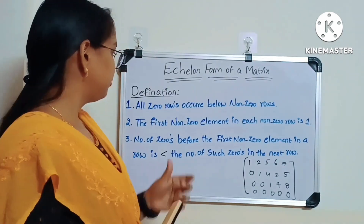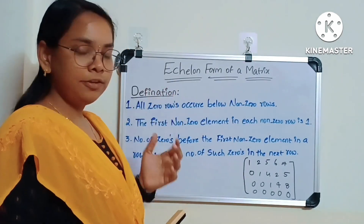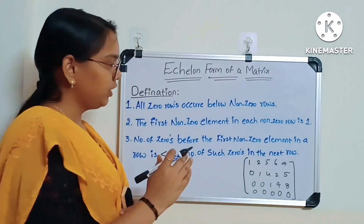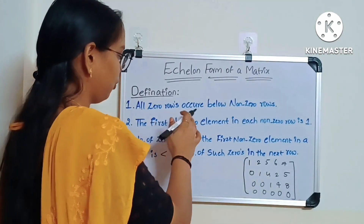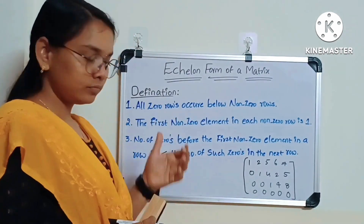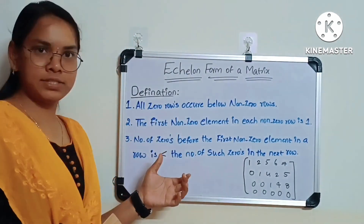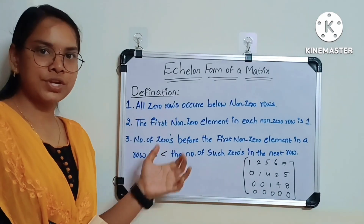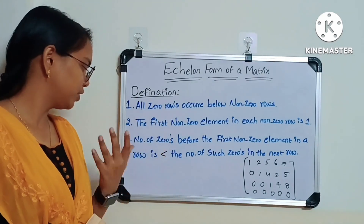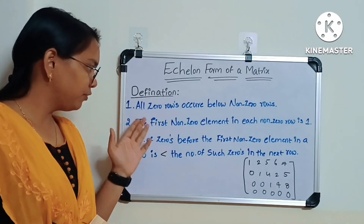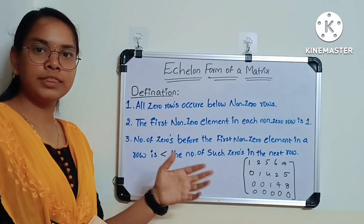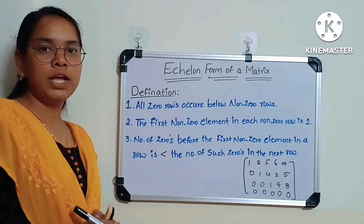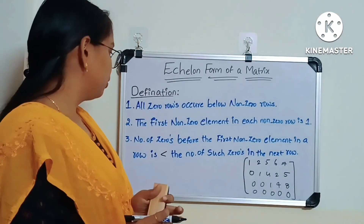Looking at the definition: a matrix is said to be an echelon form matrix if it follows all three conditions — all three rules. If it follows these three conditions, then the matrix is said to be an echelon form matrix.